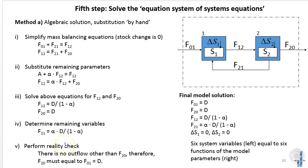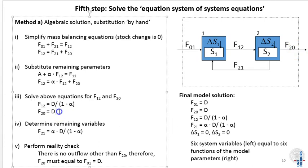This is the system solution, just solving equations step by step. It's always good to do a reality check to verify your system solution makes sense. For example, in this system, since we don't consider stocks, the total inflow must equal the total outflow. So F20 must equal D, and this is exactly what we found.